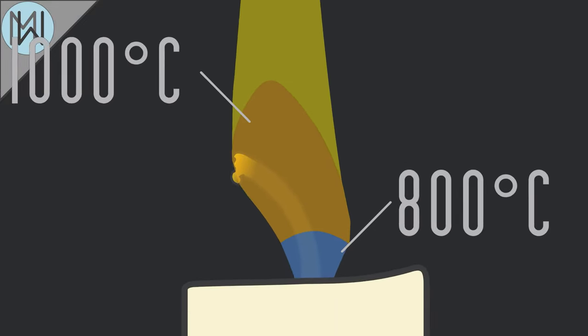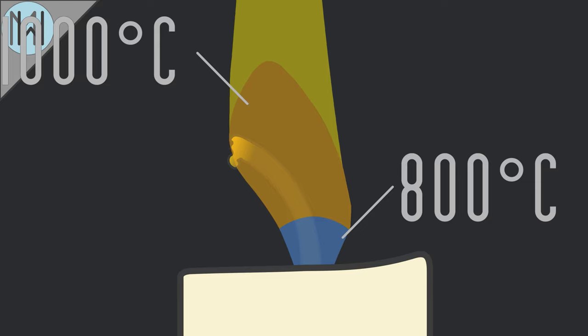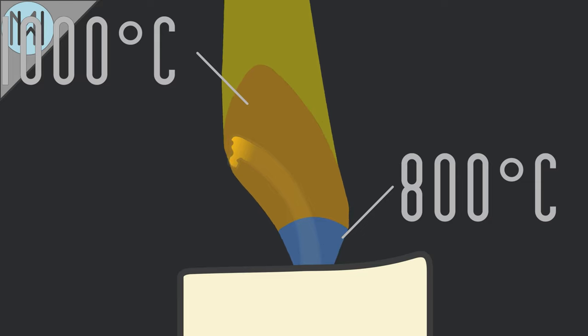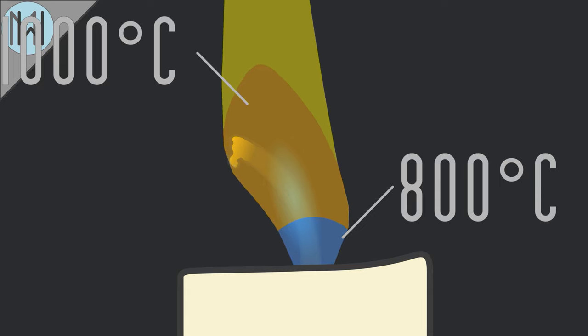The candle wick, nestled at the centre of the flame, is protected from the higher perimeter temperatures by the cooler core of the flame and the vaporised candle wax that the wick emits.